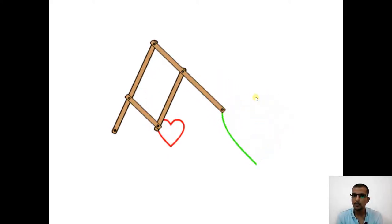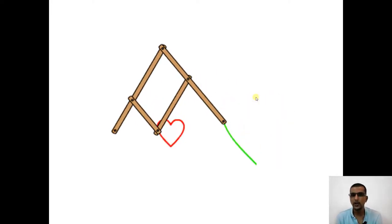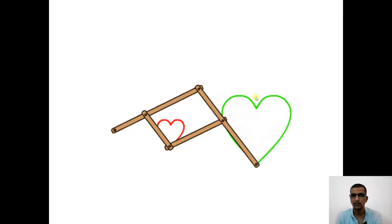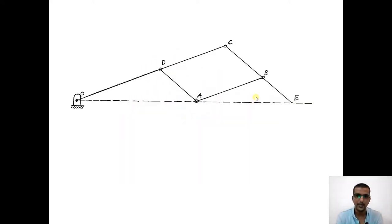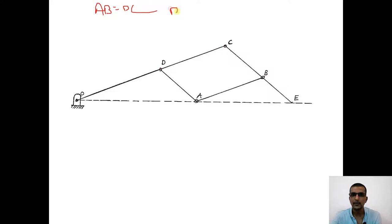Now let us go in to see how the pantograph is constructed and how it is going to work, and let us prove that it is going to trace only the path that we are supposed to trace. This is how the construction of a pantograph looks like. It is nothing but a simple four-bar linkage. We have a parallelogram here A, B, C and D, such that AB equals DC and DA equals CB. The link CD is extended below to meet at point O, and point O is a fixed point - it cannot move.